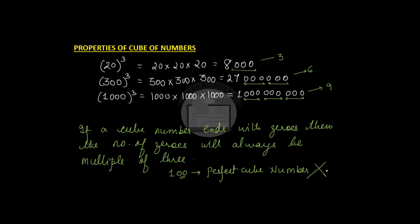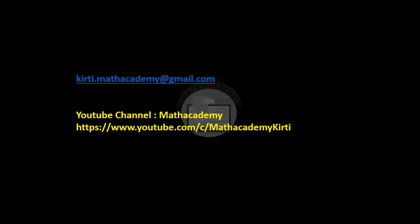So we have seen two properties of cube numbers: the cube of an odd number is odd and the cube of an even number is even; and the second property, if any cube number ends with a zero, the number of zeros will always be a multiple of three. In our next video we will see how to determine whether a given number is a perfect cube using the prime factorization technique. If you have any doubts you can send me an email at kitty.mathacademy@gmail.com. If you liked my videos please like, share, and subscribe. Thank you.